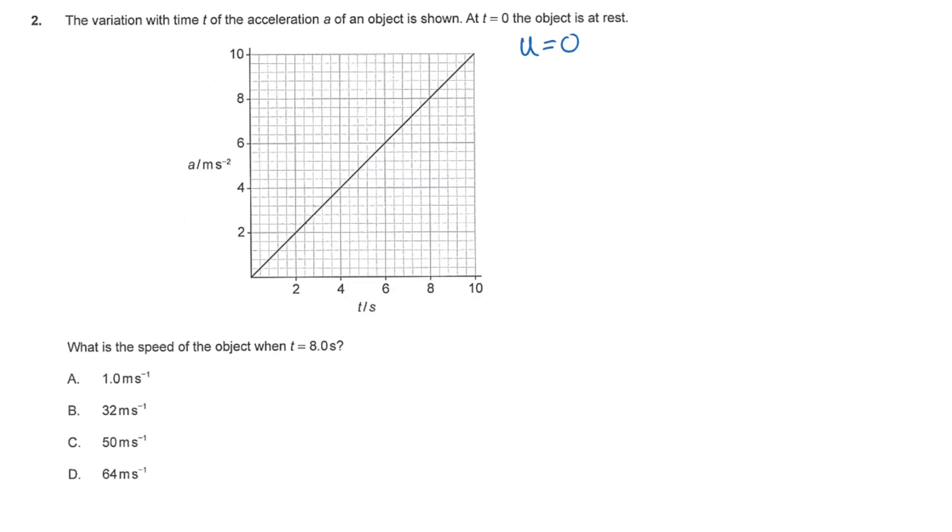That means our initial velocity is equal to 0 meters per second. Now the question is, what is the speed of the object when t equals 8 seconds? Well, speed is the scalar magnitude of velocity, and in order to find the velocity, we need to look at the graph.